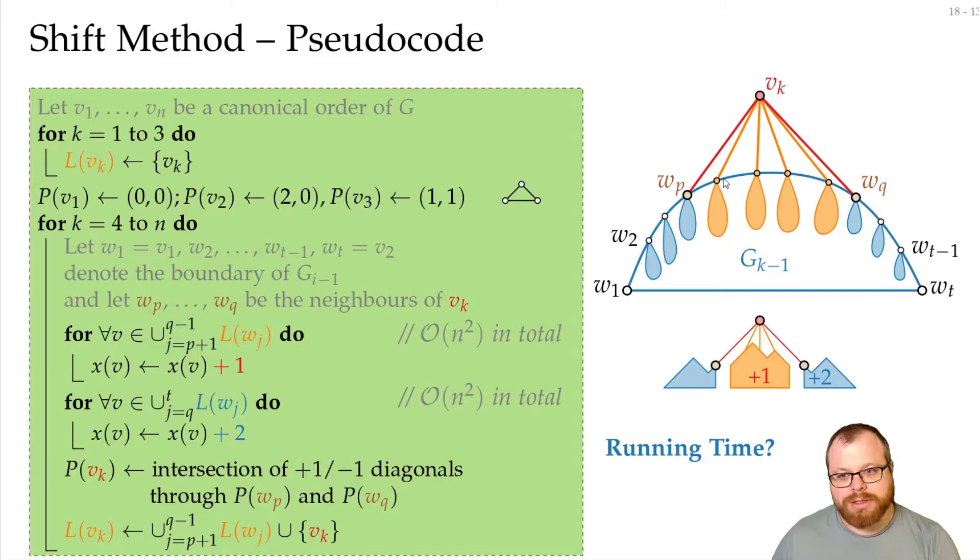When we have to move all the vertices in here, it's enough for us that the parent knows by how much everything here has to be shifted. And then later we can go through the tree and apply all these shifts. So we don't calculate it for every vertex, but only for the parent as the representative.